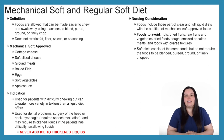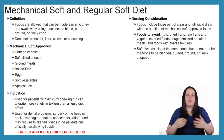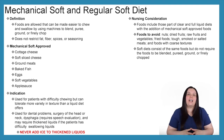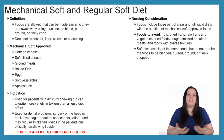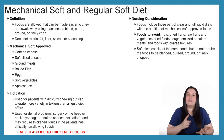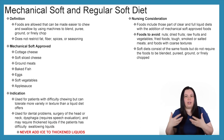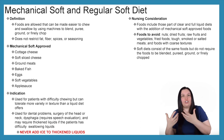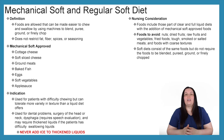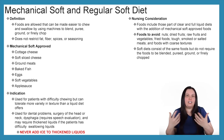Soft diets consist of the same foods as mechanical soft, but they don't require the food to be blended, pureed, ground, and finely chopped. With mechanical soft, foods must be blended, pureed, ground, and finely chopped. With regular soft, those additional processing steps are not required.